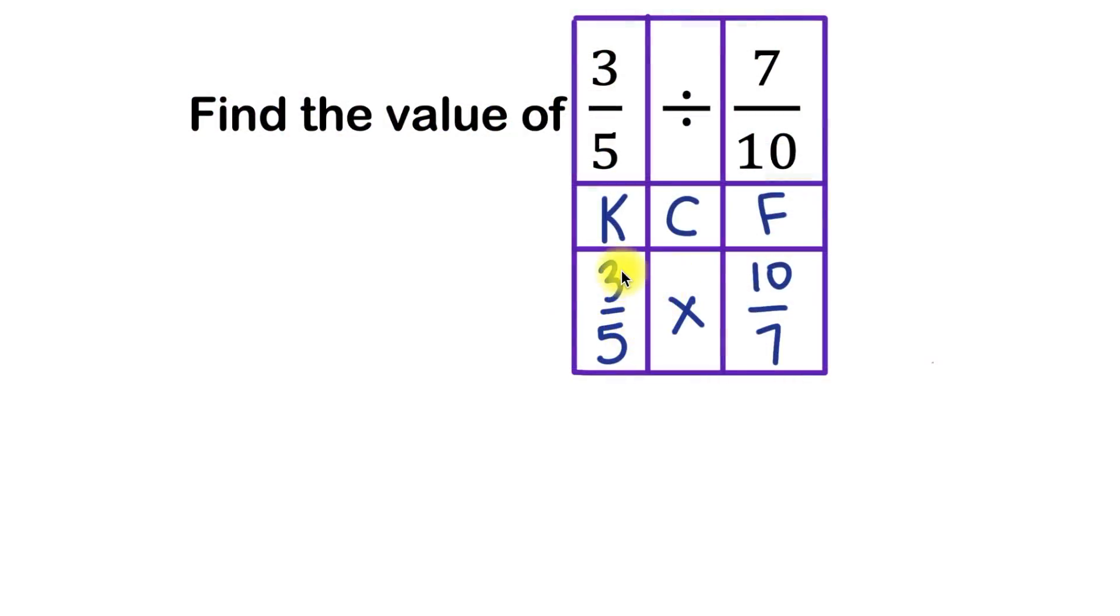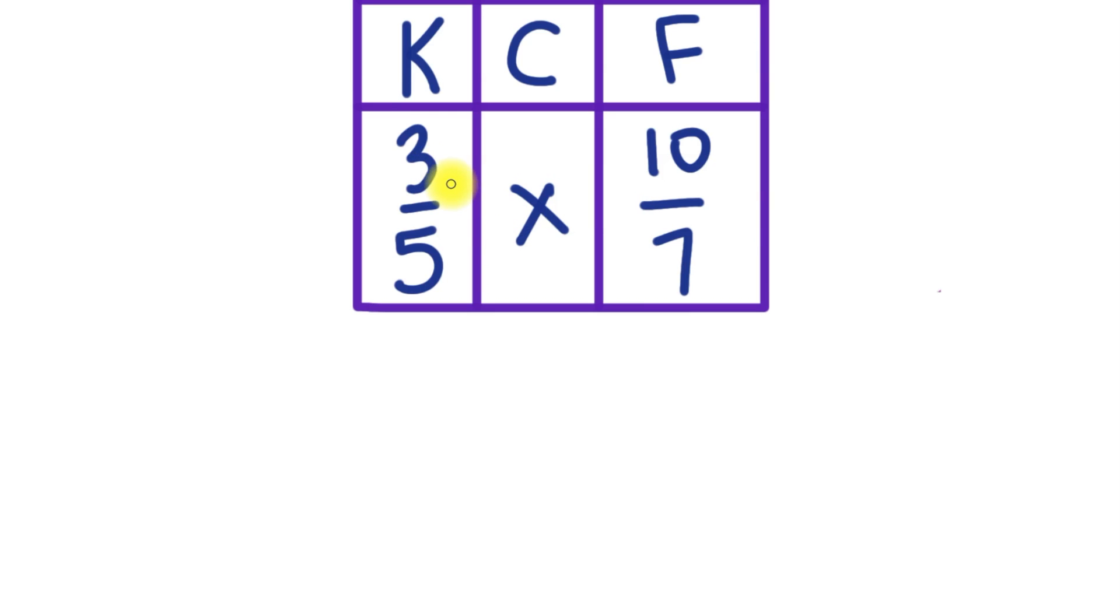So let's go back to this point after we've already kept the first fraction, changed the division to multiplication, and flipped our second fraction, the divisor, from 7 over 10 to 10 over 7. Once we get to this point, let me zoom in a little bit.